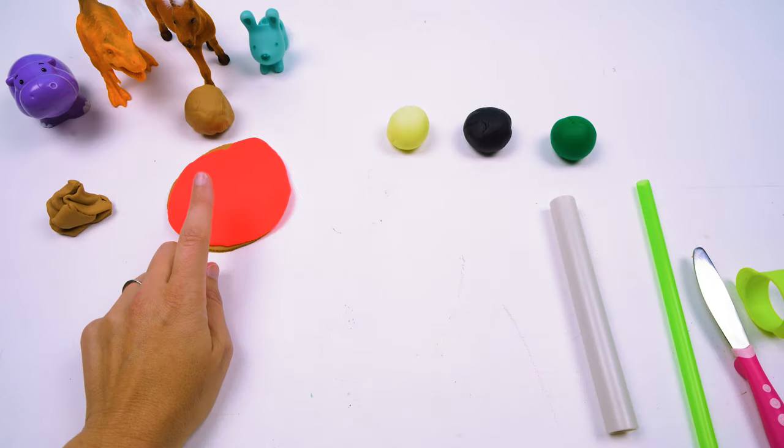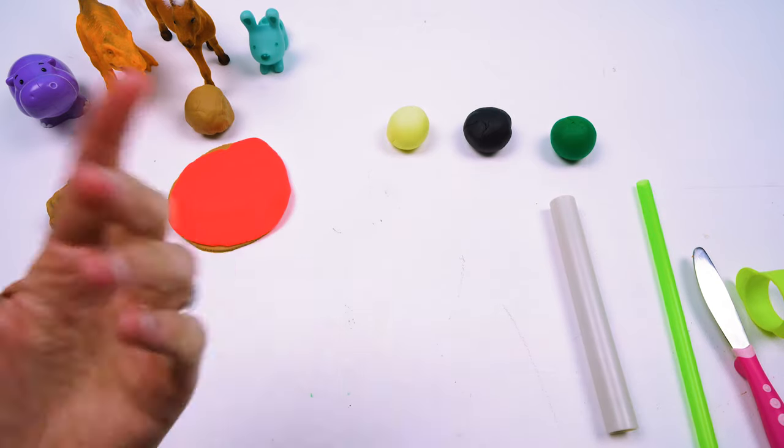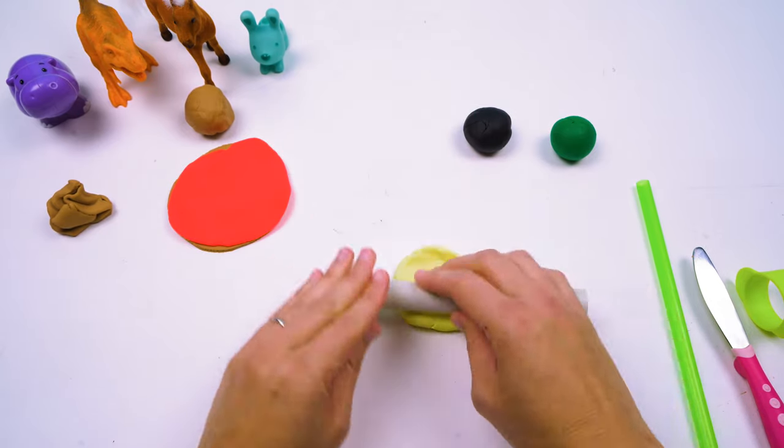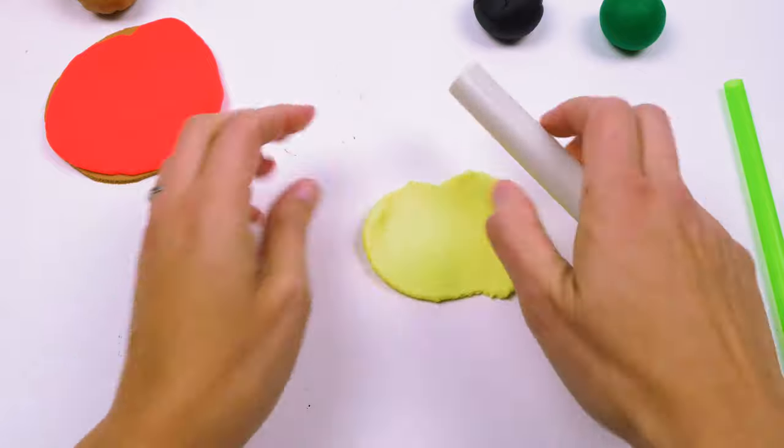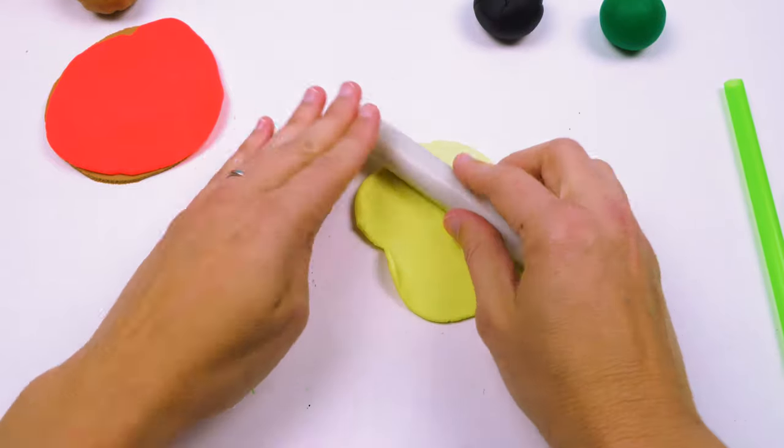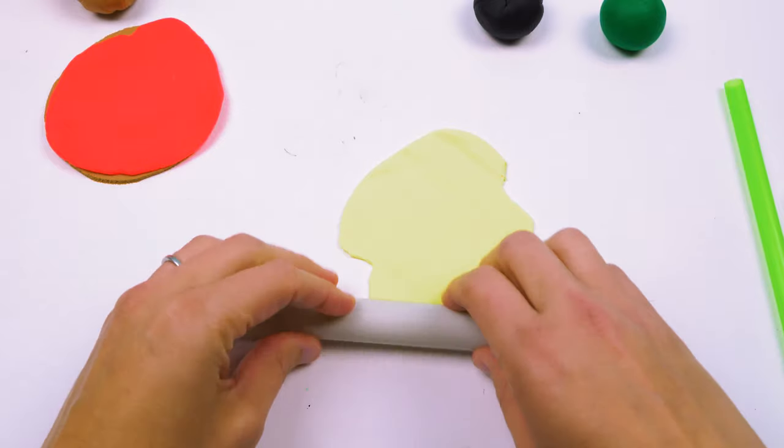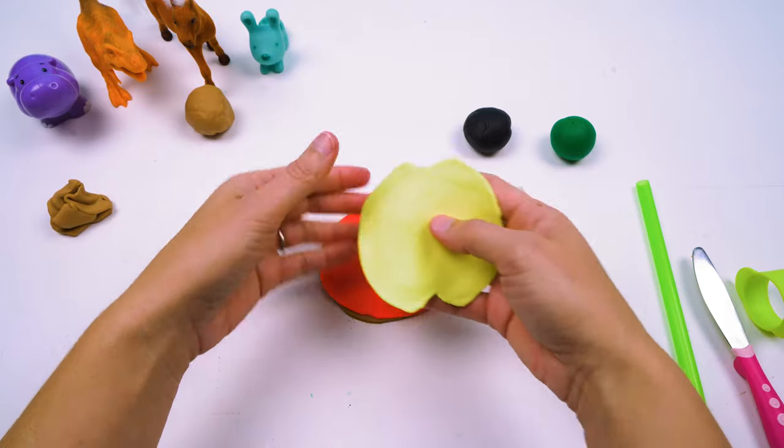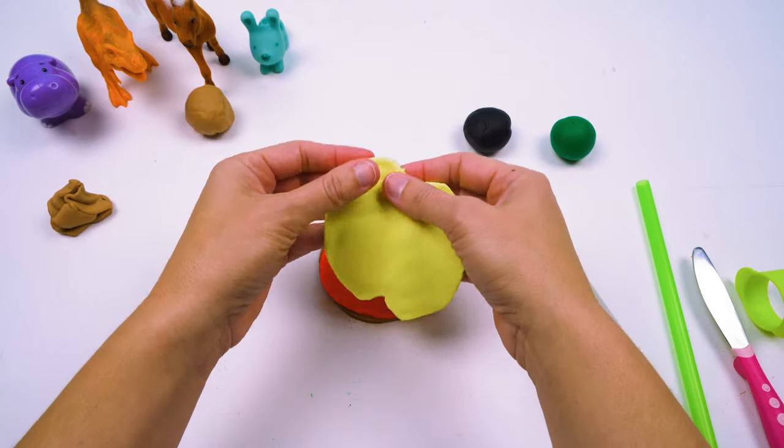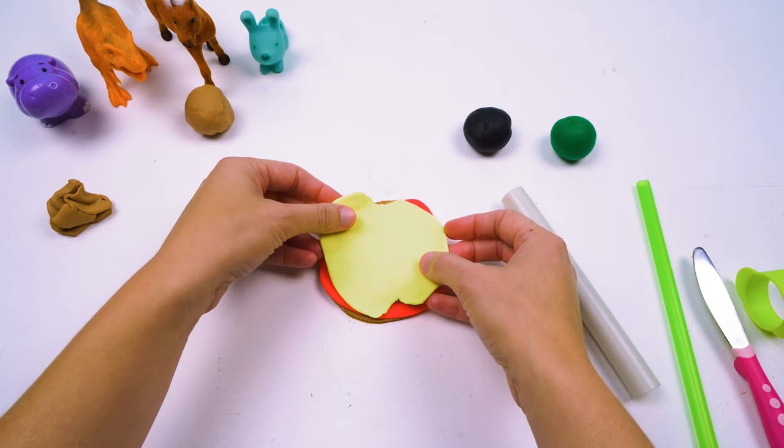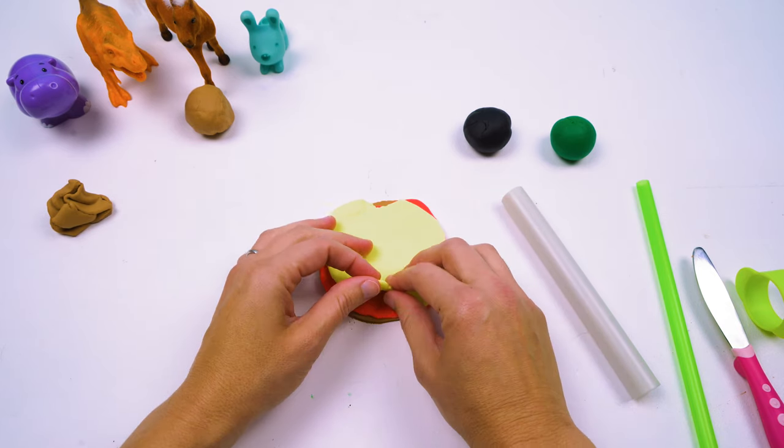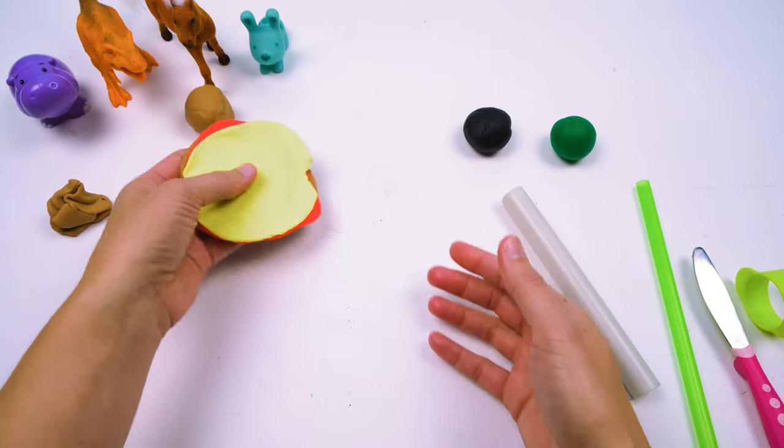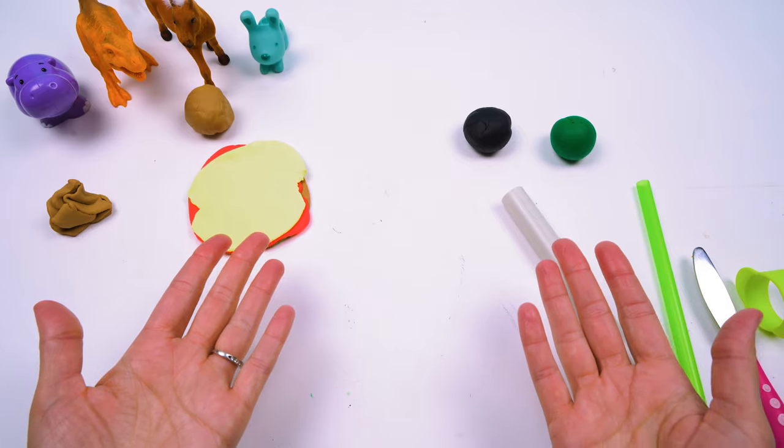OK, and then on top of the sauce goes the cheese of course. So let's make some cheese. And we're going to put lots of cheese in our pizza so it covers the crust and everything and comes ooey gooey off the sides. Ooh, look at that pizza. Mmm, that looks really good. OK, so now we need toppings.